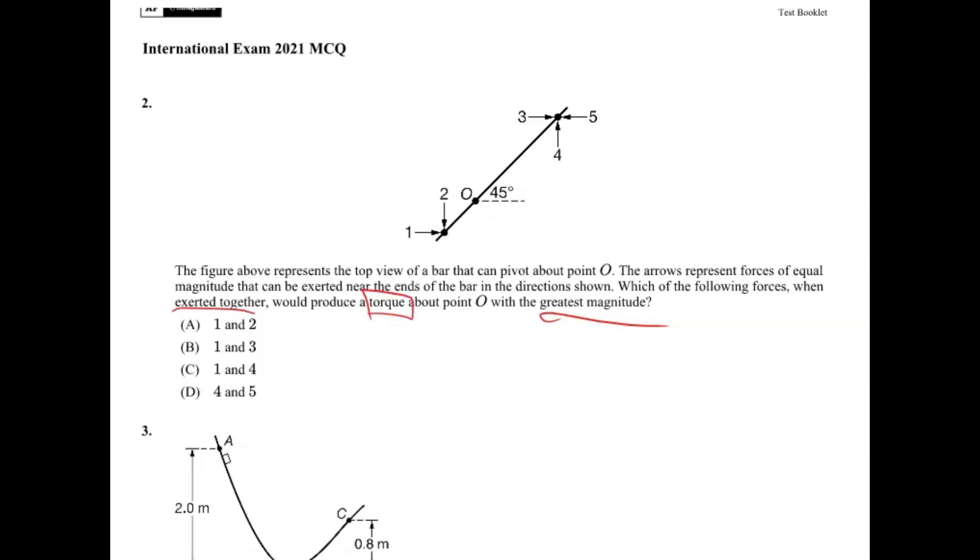Alright, so the torque equation is torque equals distance from the pivot point, the radius, the perpendicular force, and we'll throw sine theta in. So the force tells us it's going to be equal magnitude. So this is going to stay constant for all of these. So we want to take into account direction, distance from the pivot point, and angle if we need to. So yeah, let's just take into direction first, and we can see for choice B, that it's not going to be choice B because force one is acting counterclockwise, force three is acting clockwise, and so they are opposing forces.